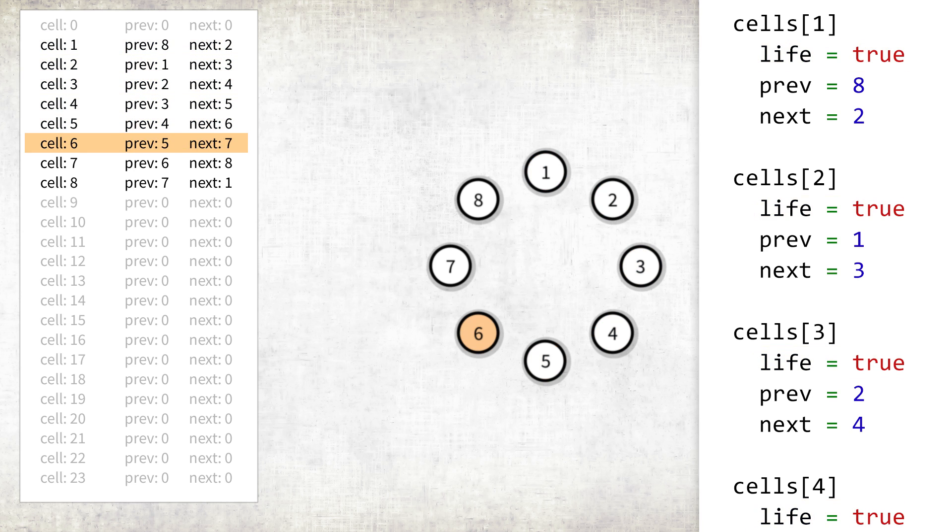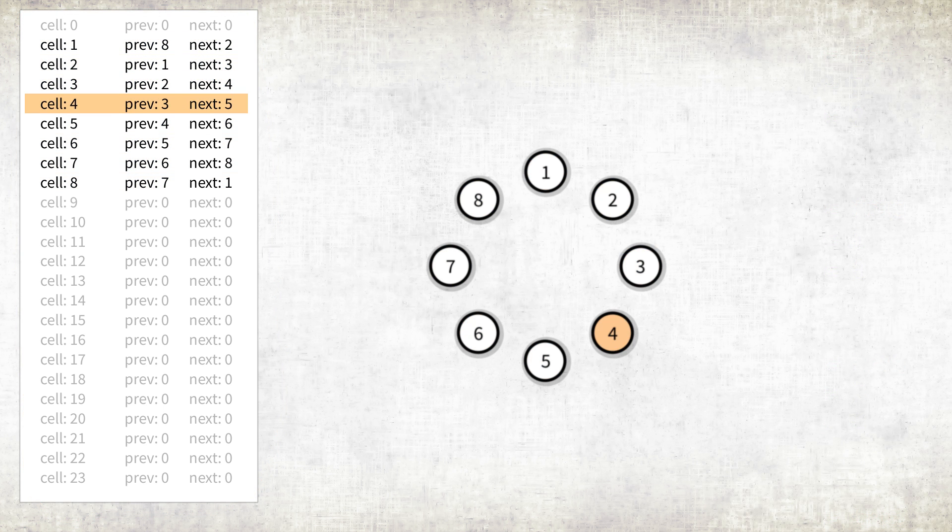A reference is just an index of the next and previous cell in the list of cells. During the simulation, we iterate in circles using a reference to the next cell.